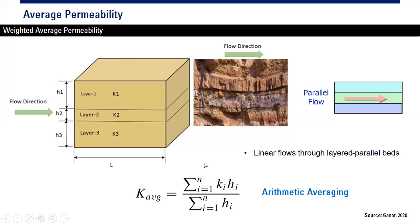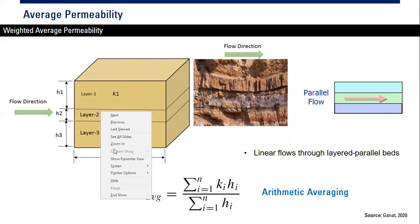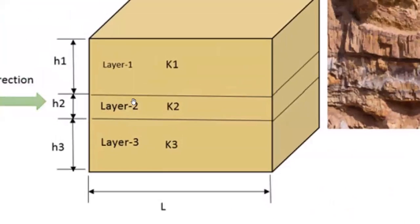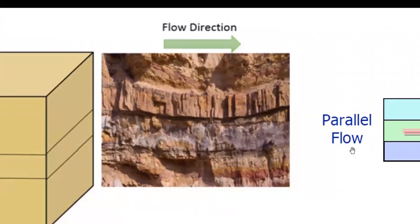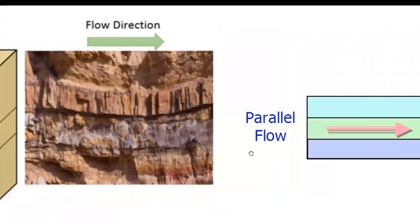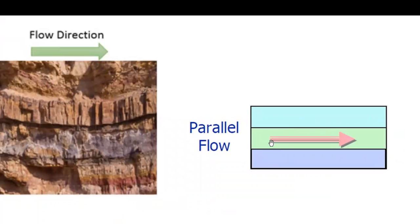There are several ways to average the permeability. The first one: if the flow direction is like this and you have three layers — layer one, layer two, and layer three — with permeability k1, k2, k3 and different thicknesses h1, h2, h3, with flow direction parallel, this is called parallel flow through three layers with different permeability and different thickness.